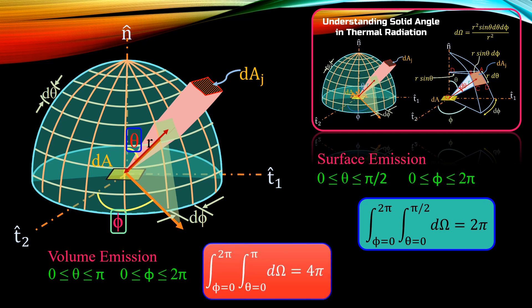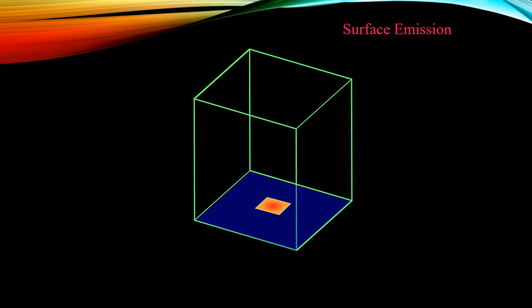Today I will discuss why the limits of theta and phi angle for surface and volume emission are taken as shown here. Let's consider a cubicle enclosure or box with a small surface on the bottom boundary emitting radiation.